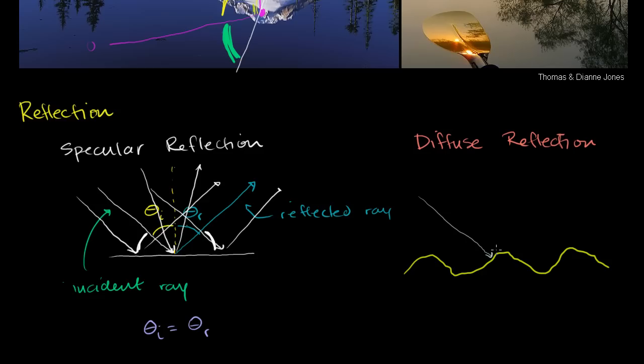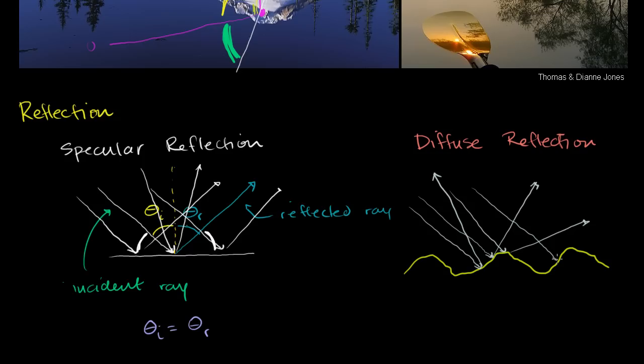With diffuse reflection, all sorts of things happen because we don't have a smooth surface — the molecules make up the surface do unpredictable things to light. If light comes in at one point, it might reflect in one direction; at the same angle at another point, it might go in a completely different direction. Each point scatters light differently, so the reflected rays go in all sorts of crazy directions and get all mixed up.